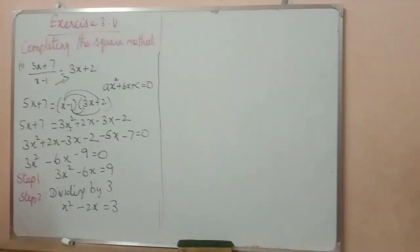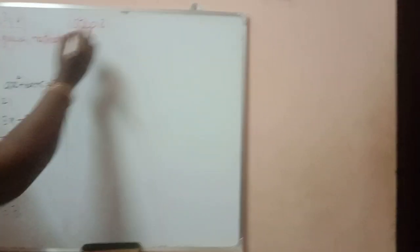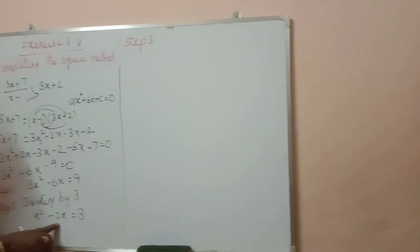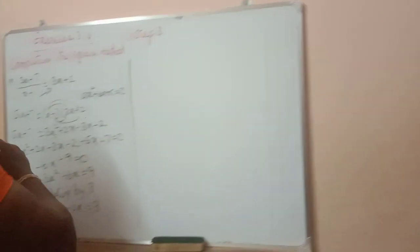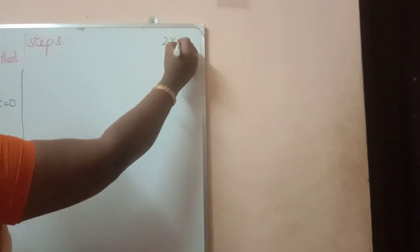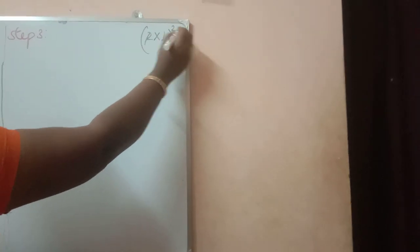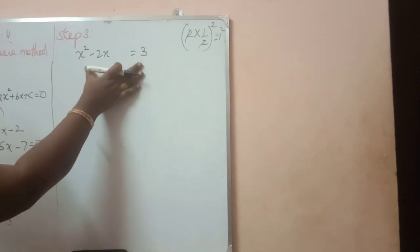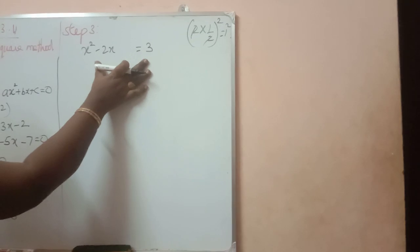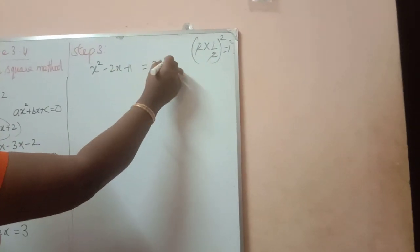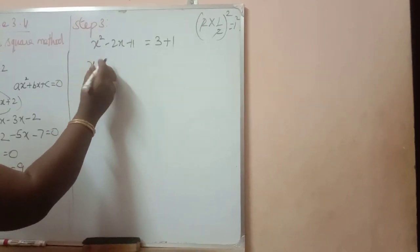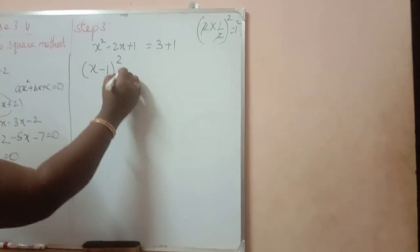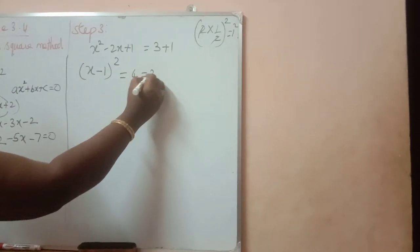Step 3: coefficient of x is 2. Write the coefficient alone. Coefficient of x into half, the whole square: 2 into half, the whole square — 2 will be cancelled, so 1 square. We have to add 1 square on both the left-hand side and the right-hand side. We got x square minus 2x — adding this 1 square, that is 1, on both sides. So, this we can write: square root of x is x, from x we get the sign, square root of 1 is 1. The whole square is equal to 3 plus 1 = 4. 4 we can write as 2 square.